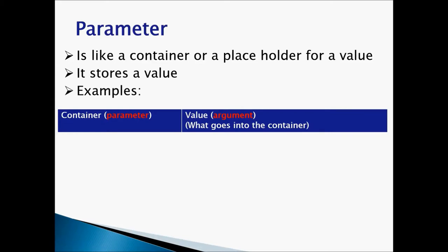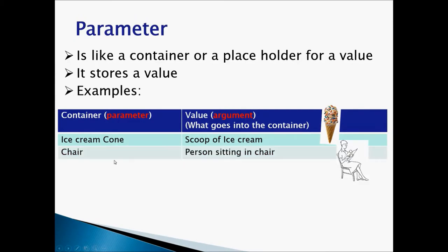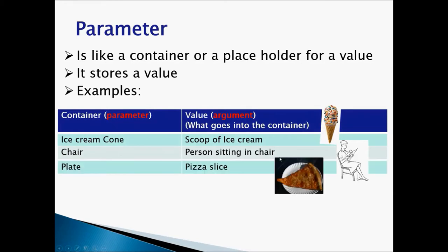For better understanding, let's take a look at some real world examples so that we can understand what a parameter actually is. Ice cream cone is a container, and what goes into ice cream cone is a scoop of ice cream. Chair is a container. Person sitting in the chair is the value. Plate is a container. What goes into plate is a pizza slice or any food. Glass is a container. What goes into the glass? Milk, or orange juice, or water. Looking at these examples, you kind of know that every container will store a value.